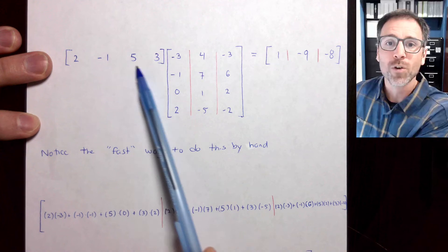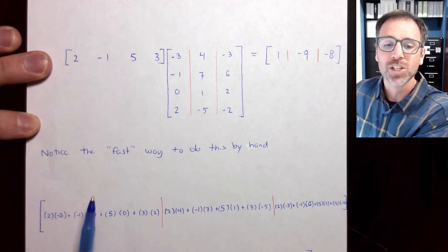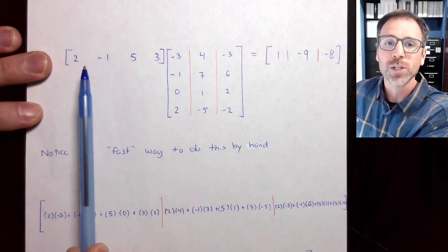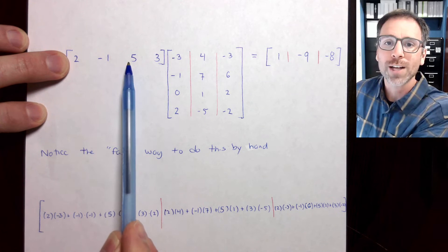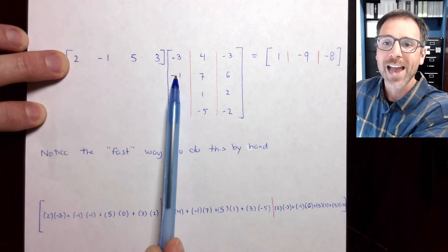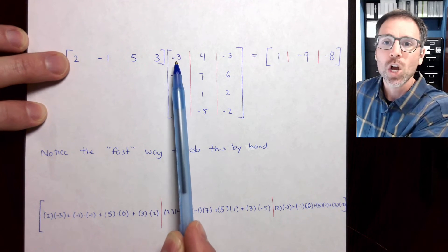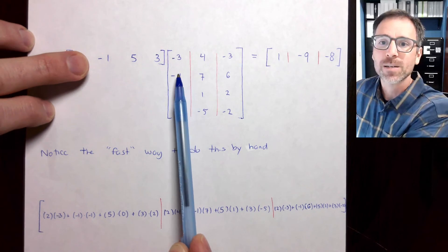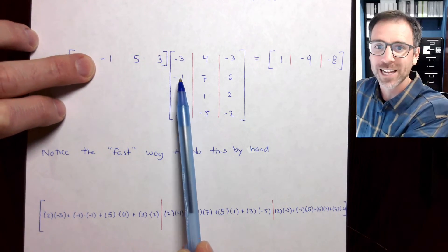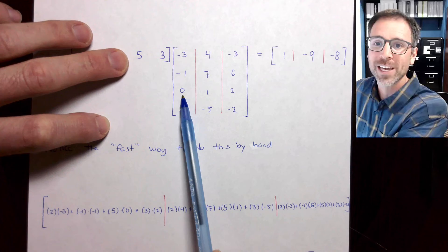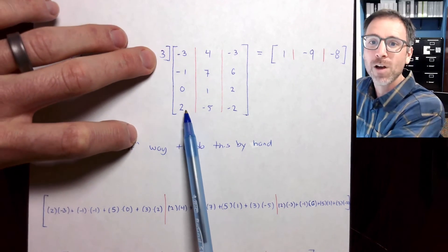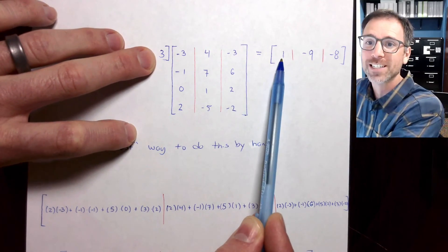Specifically, notice that with a row vector matrix multiplication, we want to get the individual entries so I can actually work across the vector x transpose and down the individual columns. So here, 2 times negative 3 is negative 6, plus 1 is negative 5, plus 0 is negative 5, plus 6 is positive 1, that's exactly what I got.